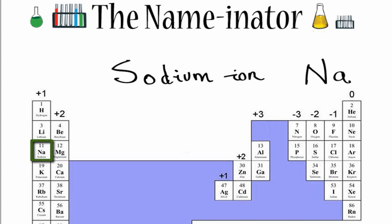If I look at group one that sodium's in, I can see that all of those have a plus one charge. So I'll just write a plus up here — I don't actually have to put the one. And that's the chemical formula for the sodium ion.